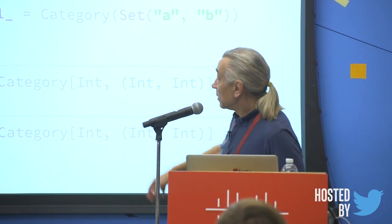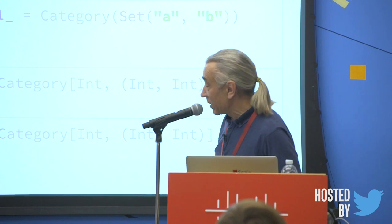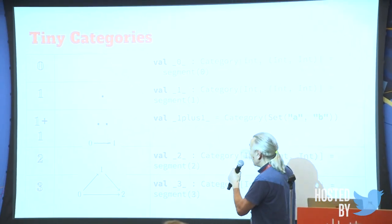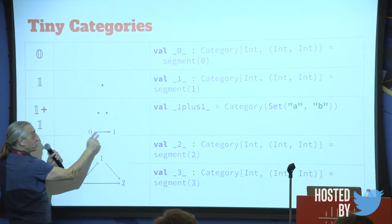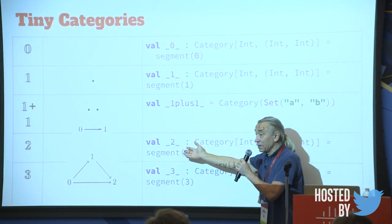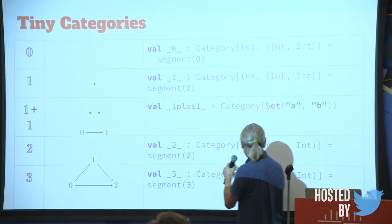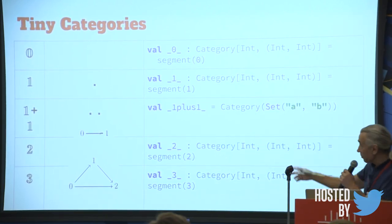There's a rendering issue I'll explain: category 1+1 is just two objects with no arrows between them — objects named a and b, and the rest are identities. Category two has two objects zero and one, and an arrow from zero to one, plus two identities — it's a segment, just a partial order. Category three is another segment: three elements zero, one, two. Segments can build any linear partial order from zero to whatever.